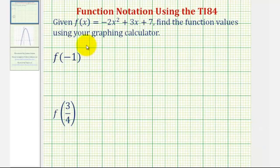Welcome to a lesson on how to determine function values using function notation on the graphing calculator. In this example, we're given f(x) = -2x² + 3x + 7. We want to determine f(-1) and f(3/4).